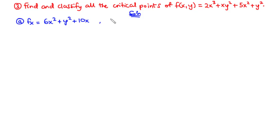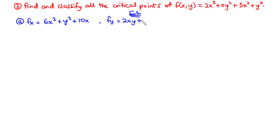Now we move on to fy. We differentiate 2x cubed, that goes to 0. For the next term, we differentiate y squared with respect to y and get 2y, so 2y times x becomes 2xy. Then we differentiate 5x squared with respect to y, we get 0. We differentiate y squared and get 2y. So we set each of them to 0.